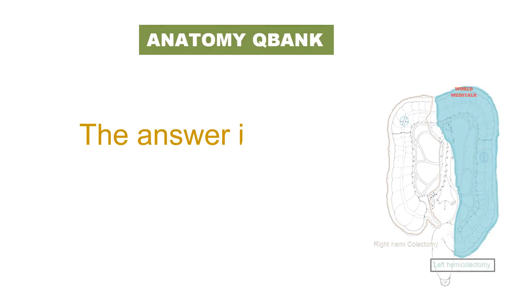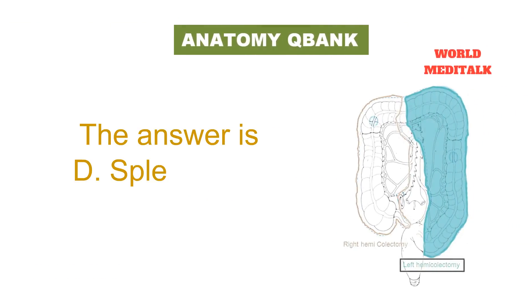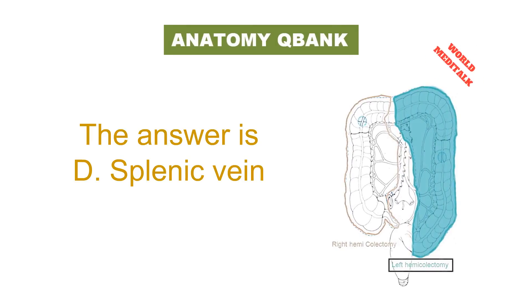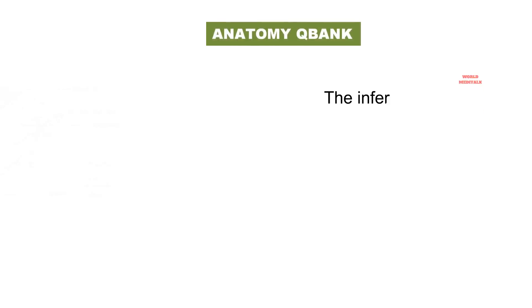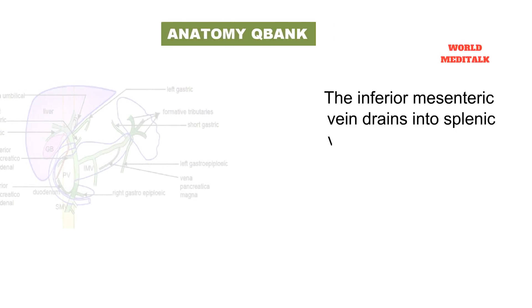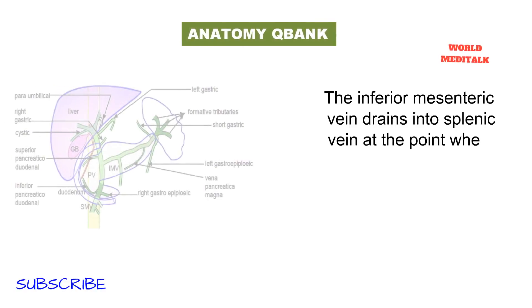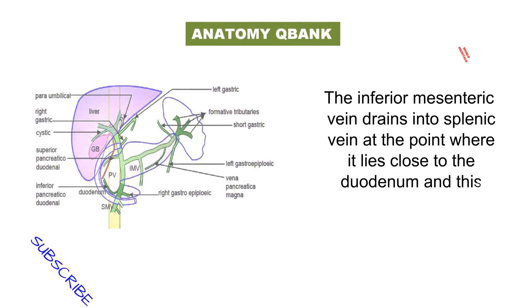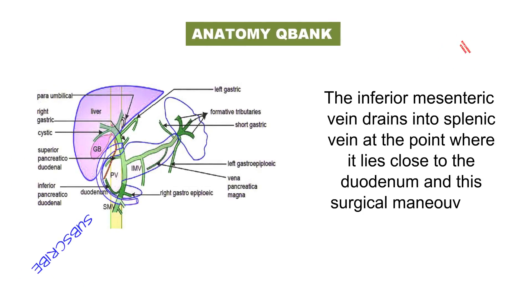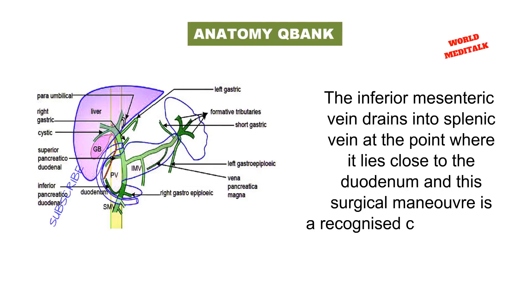The answer is splenic vein. The inferior mesenteric vein drains into the splenic vein at the point where it lies close to the duodenum, and this surgical maneuver is a recognized cause of ileus.